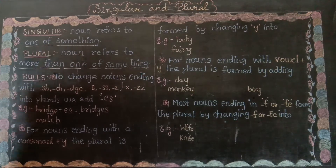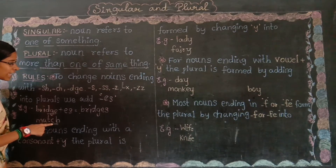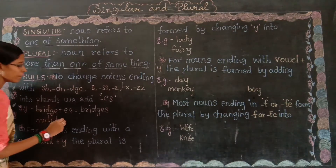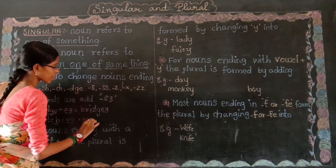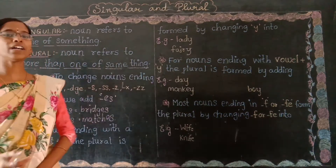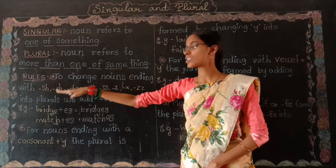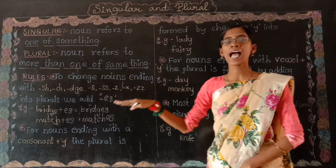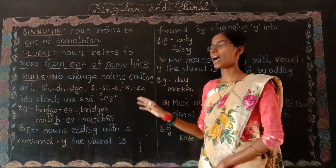See the second example. The word 'match' ends with CH. So if it ends with CH, for the plural form we should add ES to the noun. Match plus ES — the answer is 'matches.' So to recap the first rule: to change nouns ending with SH, CH, DGE, SS, Z, or X, we have to add ES to the singular noun to change it into plural. This is our first rule.